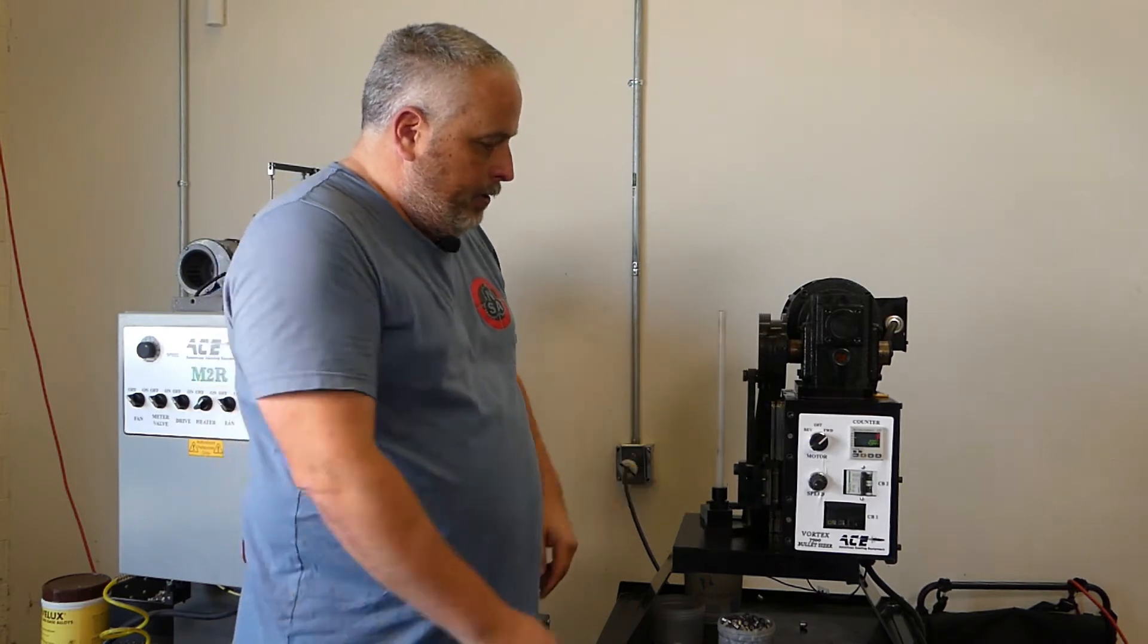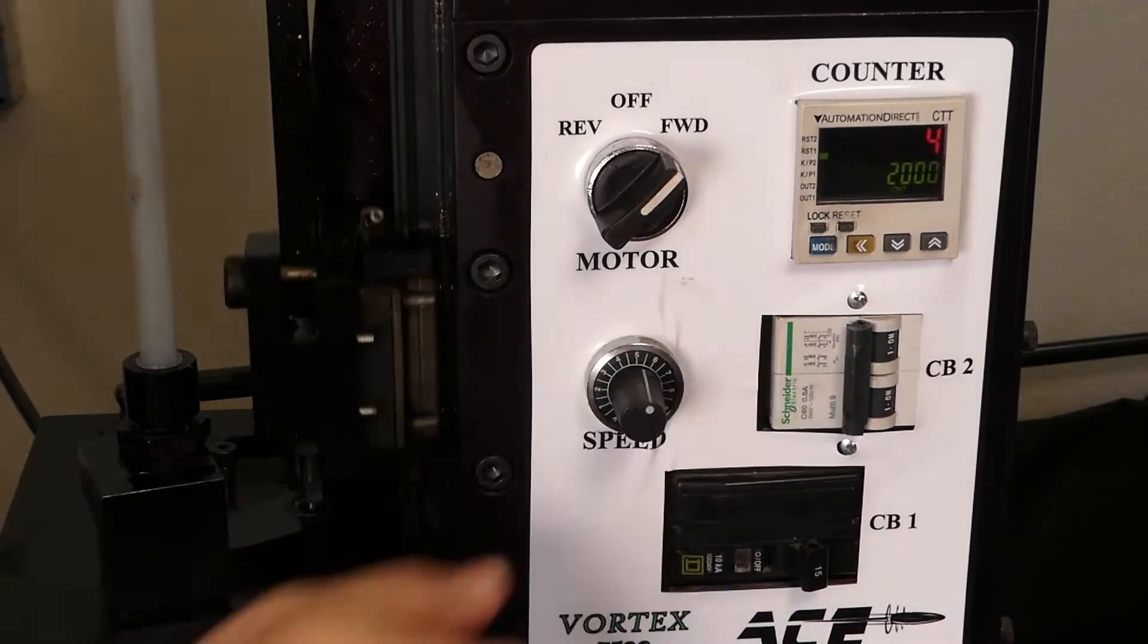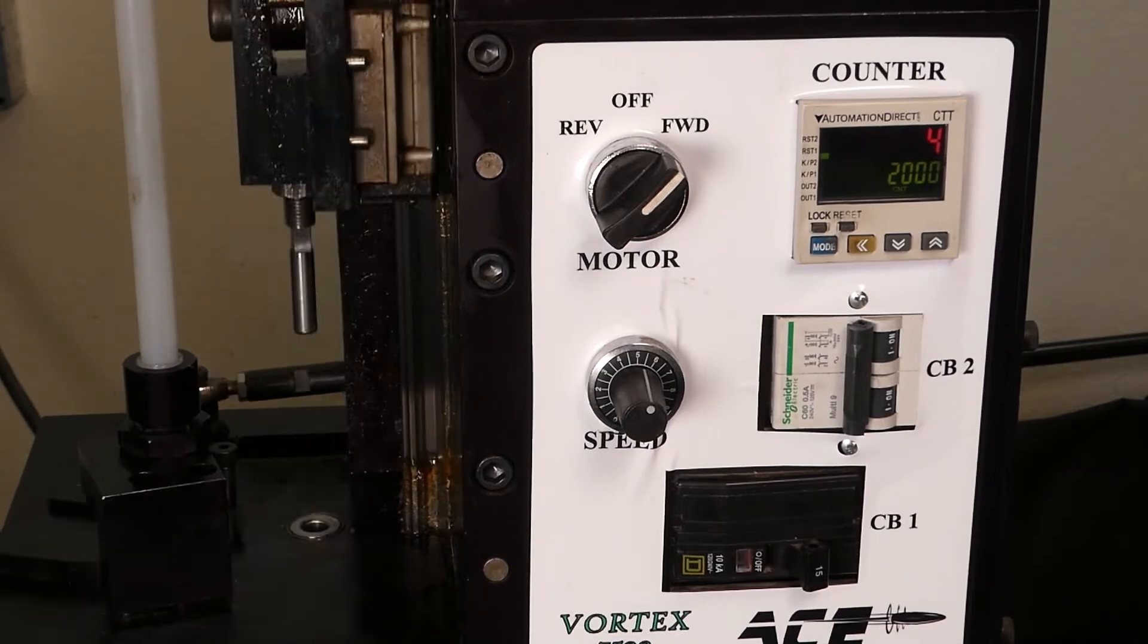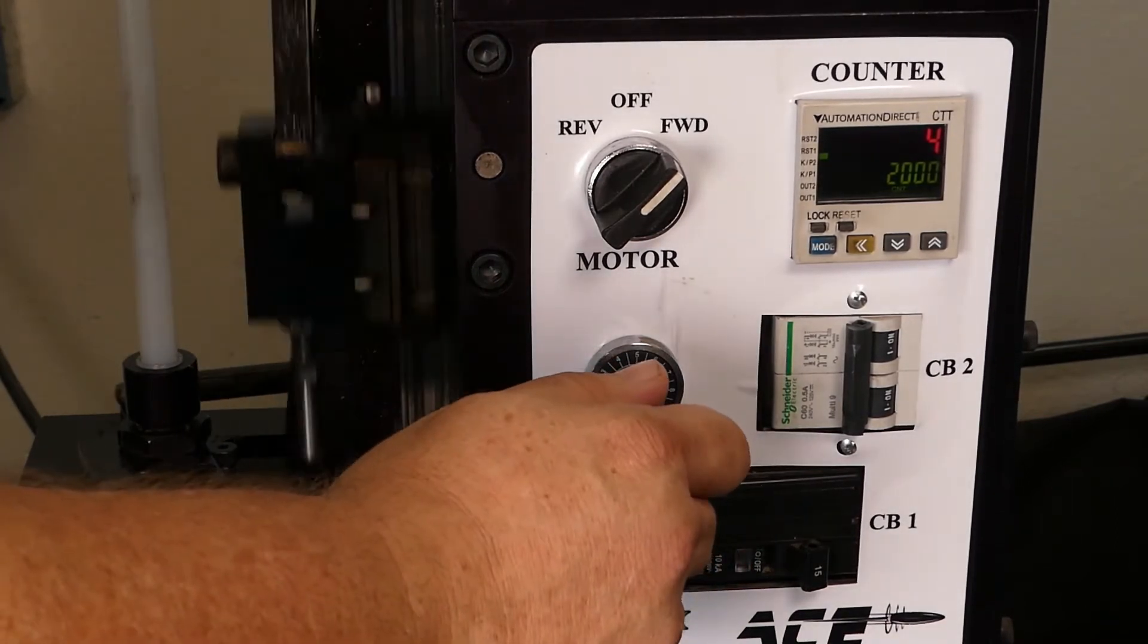They will be picked up by this arm. You can adjust the speed right here. You can do up to 6,000 bullets an hour.